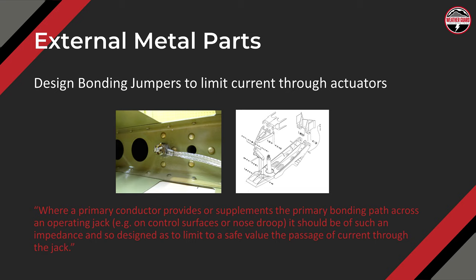The second thing: design bonding jumpers to limit current through actuators. This is typically seen on horizontal stabilizers of jets or turboprop airplanes that have horizontal pitch trims. That whole horizontal stabilizer rides on an actuator, and what you're trying to do is provide a current path that's not through the actuator. There's an example showing bond jumpers in horizontal stabilizers, with a bond jumper going from the horizontal stabilizer to the scissor structure that carries the current away from the actuator — pretty standard designs.